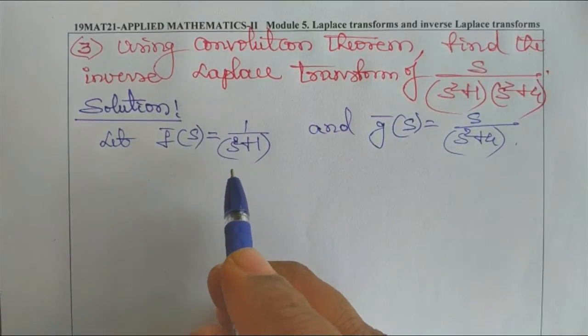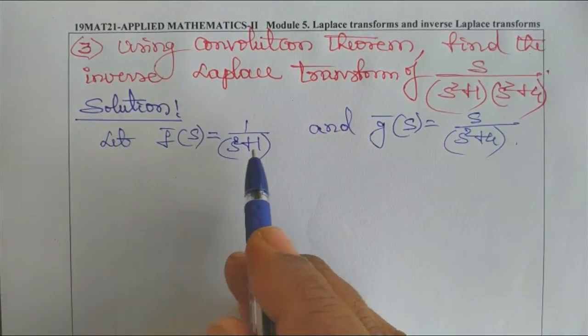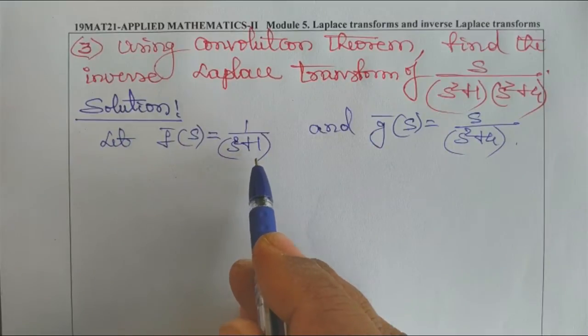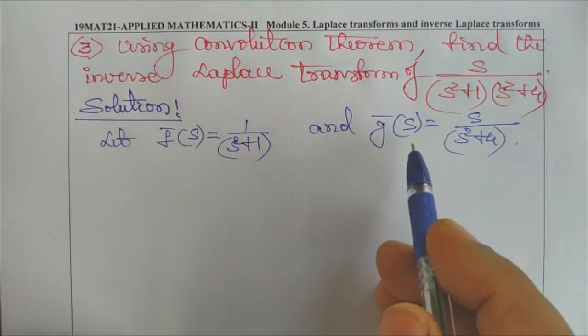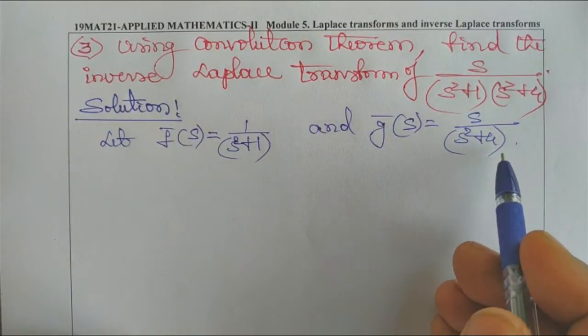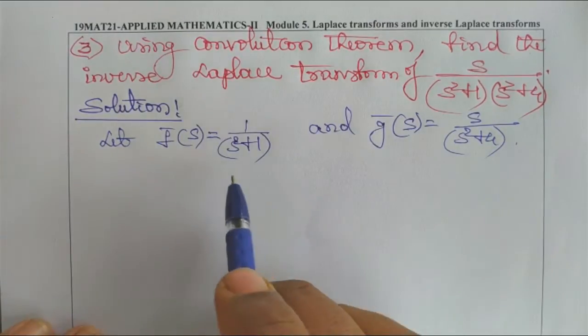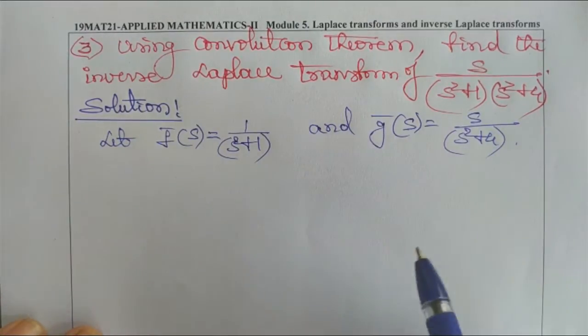Sometimes teachers will take F̄(S) as S/(S² + 1) and Ḡ(S) = 1/(S² + 4). That way also we can start the problem. Now I am assuming the first assignment.